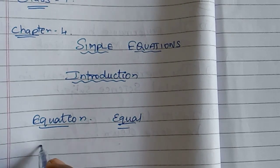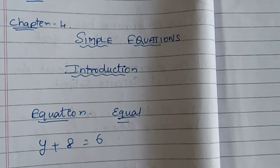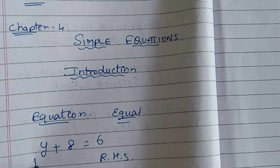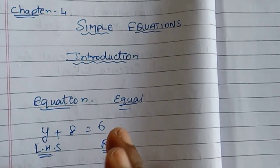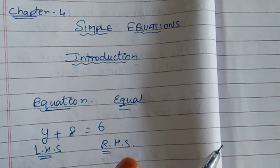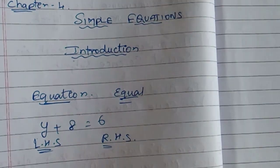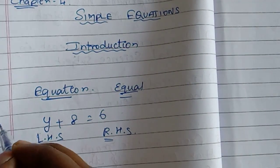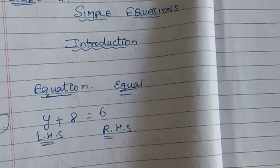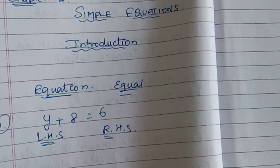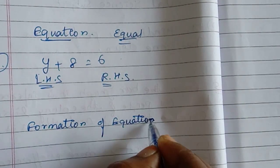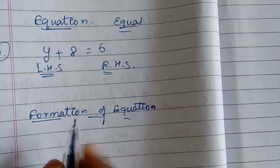Let's see: Y plus 8 is equal to 6. We have LHS and RHS — Left Hand Side and Right Hand Side. We will look at the formation of equations.